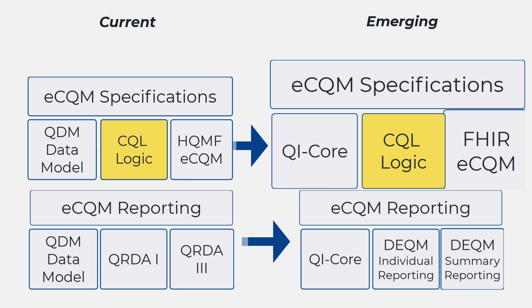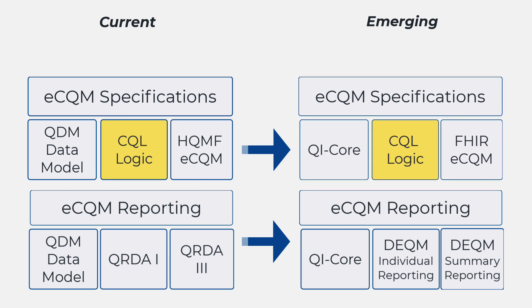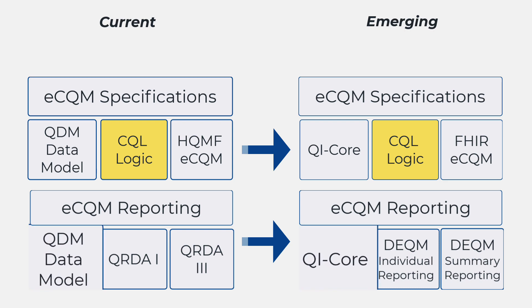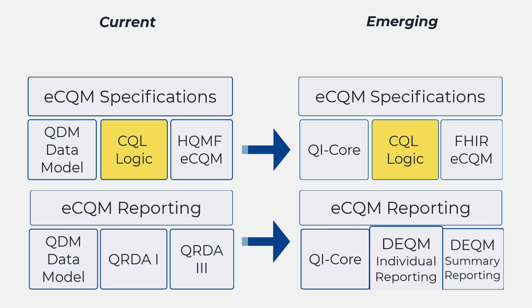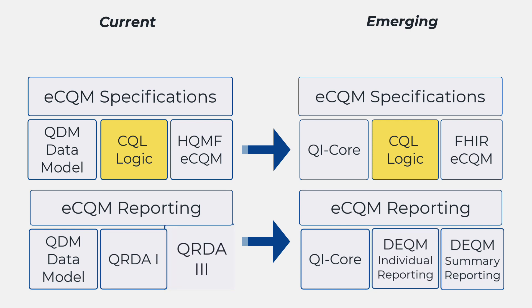The FHIR Quality Measure Implementation Guide replaces HQMF for the eCQM structure. This image also demonstrates how measure reporting might change with a transition to FHIR. In the bottom left, you can see that QI Core replaces the QDM as the data model for eCQMs in FHIR. The Quality Reporting Document Architecture or QRDA Category 1 and QRDA Category 3 are replaced with a FHIR implementation guide called Data Exchange for Quality Measurement or DEQM. QRDA Category 1 used for individual reporting is replaced by DEQM individual reporting. And QRDA Category 3 used for group or summary reporting is replaced by DEQM summary reporting.